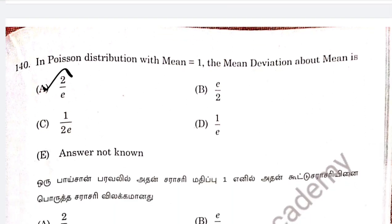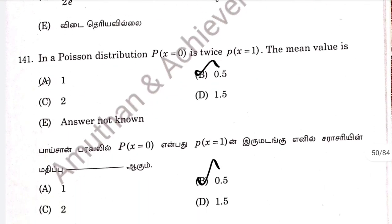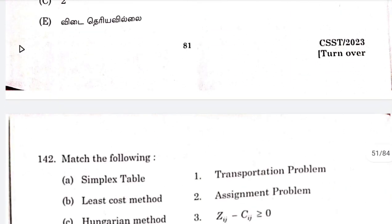Question 140: 2 by e, Poisson distribution — this is a standard problem. Question 141, option B: for a Poisson distribution, P(X=0) is equal to 0.5.